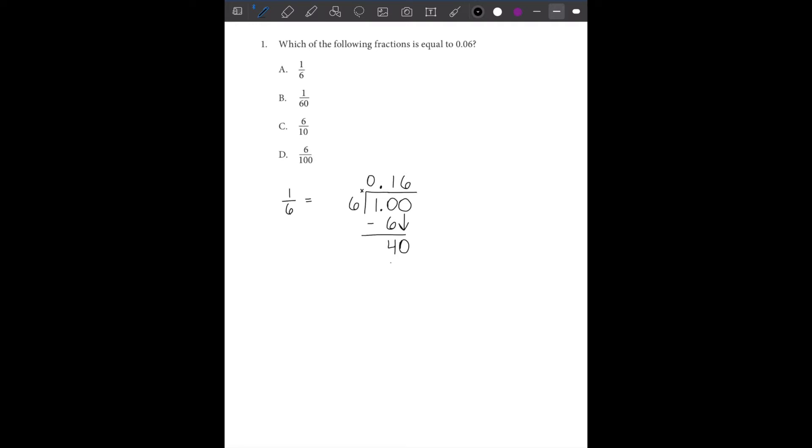Now 6 times 6 is 36. We're going to subtract, we get another 4. We can keep on going and eventually you're going to see that we're going to keep on getting 6 repeating. So to write this, we're going to put 0.1666 repeating. That's what this answer is right here in decimal form.